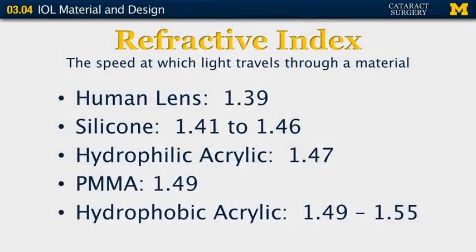So next, let me speak briefly of some of the different properties of lens implants. First, let's consider the refractive index. The refractive index is the speed at which light travels through a material. The human lens has a refractive index of 1.39. Silicone is a material that most closely mimics the human lens, and hydrophilic acrylic, PMMA, and hydrophobic acrylic have greater refractive indices than does silicone or the human lens.